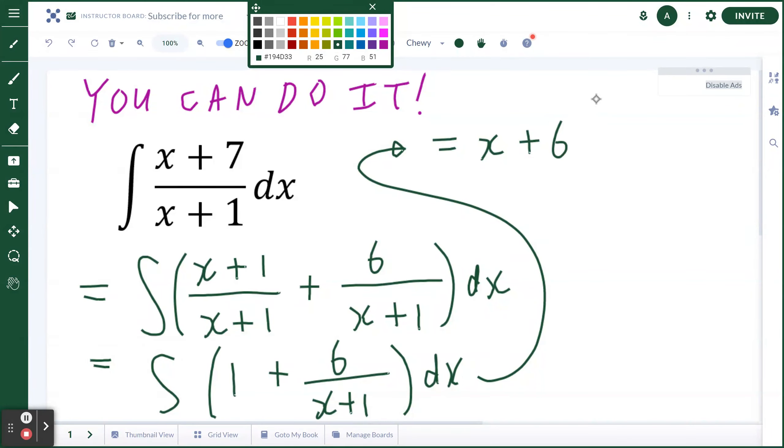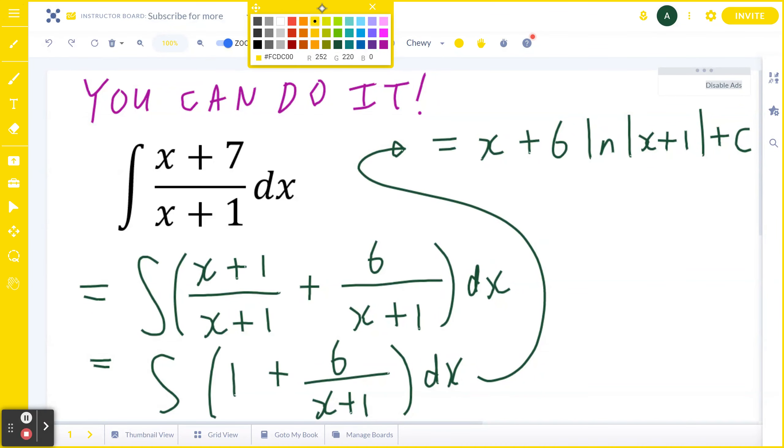And you think about the antiderivative of 1/(x+1), that's going to be ln|x+1|. Don't forget, add a constant c. Now if you want to verify that your answer is accurate, you can double check.